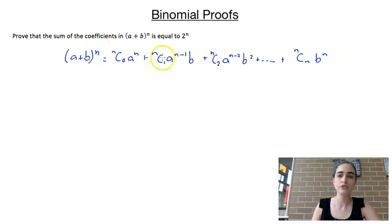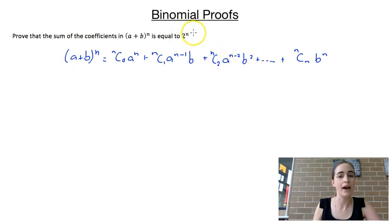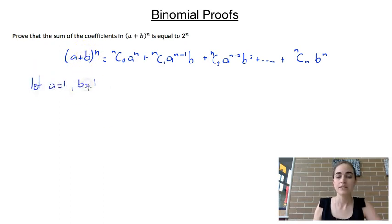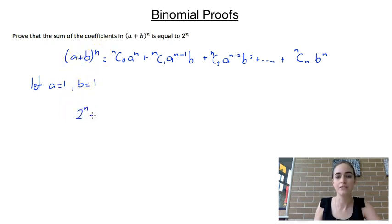One of the methods you can use to solve these is to choose values for a and b. Because we're trying to get to 2 to the power of n, I'm going to let a equal 1 and b equal 1. That means the left-hand side of the equation is going to be (1 + 1) to the power of n, which is 2 to the power of n, and then we can simplify the right-hand side as well.